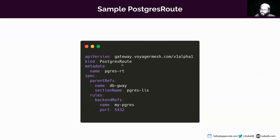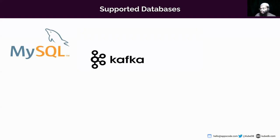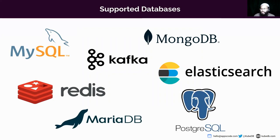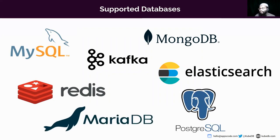The Postgres route is introduced by KubeDB Gateway — you can see the API version is gateway.vajarms.com. Similarly, we have MySQL route, MongoDB route, Redis route, and Kafka route. For Elasticsearch, the standard HTTP route works. These are the currently supported databases in KubeDB Gateway.